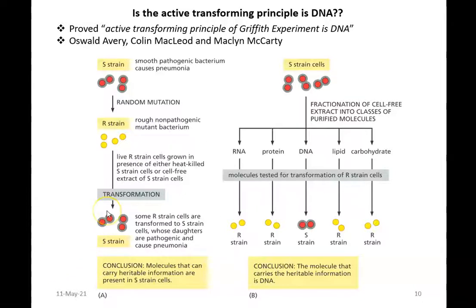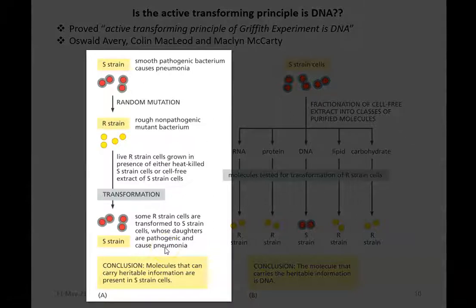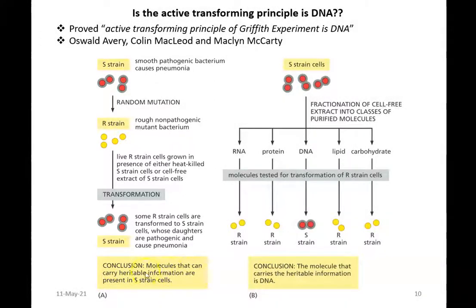Some R-strain cells were transformed to S-strain cells, whose daughters are pathogenic and cause pneumonia. This confirms the phenomenon of transformation. Molecules that carry heritable information are present in the S-strain of Streptococcus pneumoniae — that is the finding of Griffith. The S-strain, which is smooth and pathogenic, transformed the R-strain that is non-pathogenic into S-strain pathogenic cells by the process of transformation.